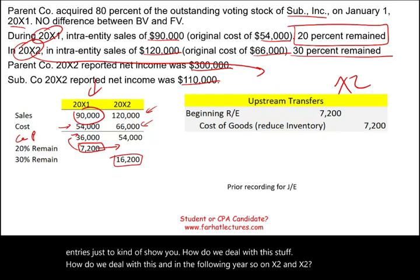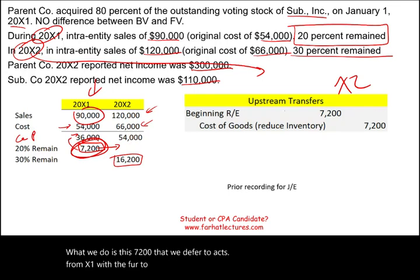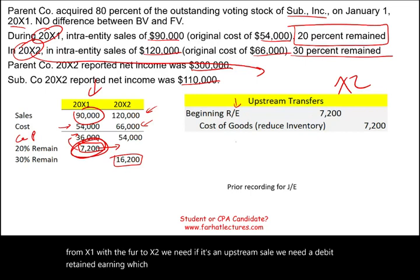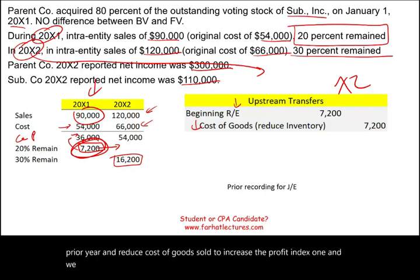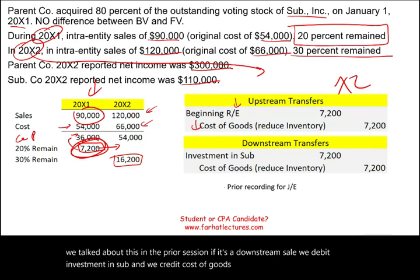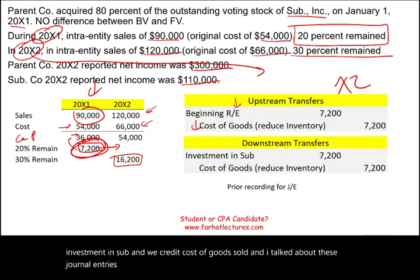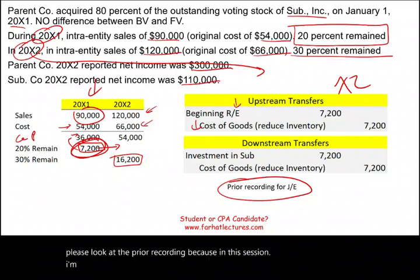For the $7,200 deferred from X1 to X2: in an upstream sale, we debit retained earnings — reducing beginning retained earnings from the prior year — and credit cost of goods sold to increase the profit recognized in X2. In a downstream sale, we debit investment in sub and credit cost of goods sold. For detailed journal entries, please refer to the prior recording; this session focuses specifically on the non-controlling interest.